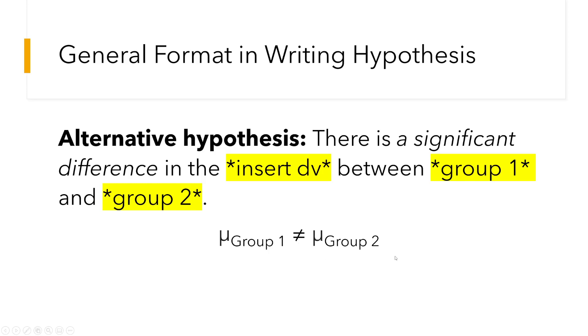Okay, so how do you determine if there are significant differences between the groups? Well, just like in other statistical analysis and other statistical treatments, what we do is that we compare the p-value with the alpha level.